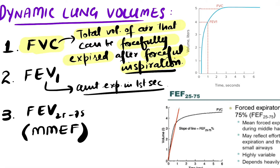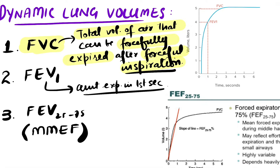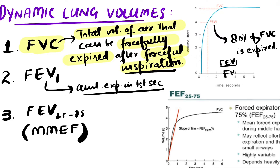FEV1 is measured exactly at one second. It has been found that during the first second, almost 80 percent of the total FVC is expired. That means FEV1 divided by FVC is almost equal to 80 percent. This is a very important ratio — it is very useful in making a diagnosis of obstructive lung diseases and other pathologies.